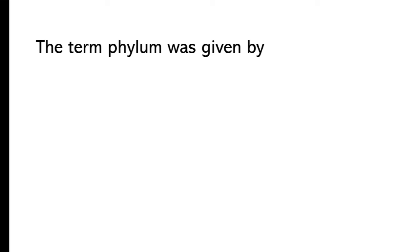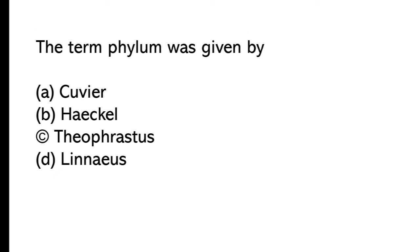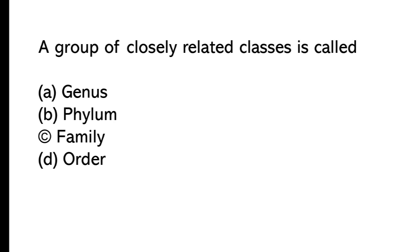The term phylum was given by: So the correct answer is option B, Haeckel. A group of closely related classes is called: Genus, phylum, family, order. So the correct answer is option B, Phylum.